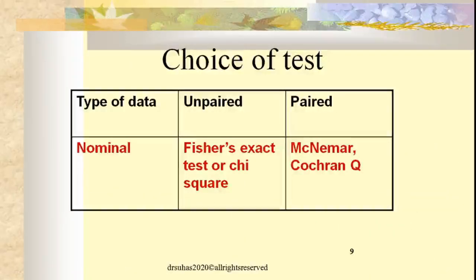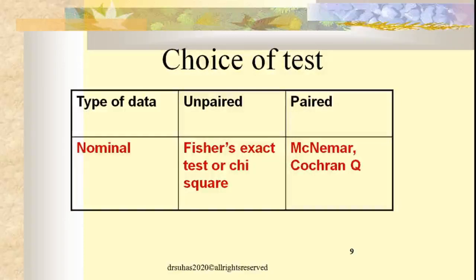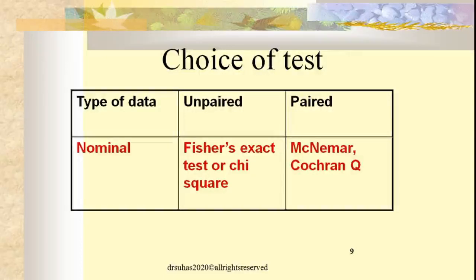If the data are nominal and you want to see whether there is any association among categorical data between the groups, you use Fischer's exact test or Chi-square test. Fischer's exact test is used when the sample size is small; Chi-square test when it is large. When you want to test within the groups on two occasions, you use McNemar's test; on more than two occasions, Cochrane-Q. A detailed session on selection of the appropriate test will be prepared separately.